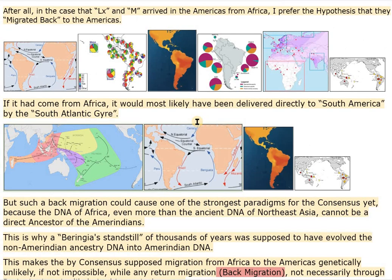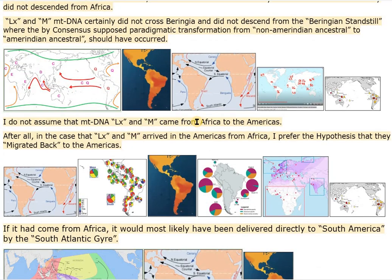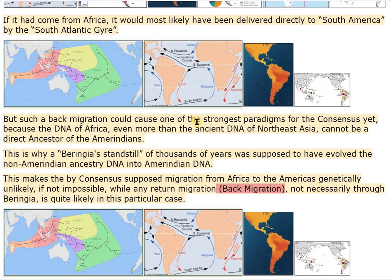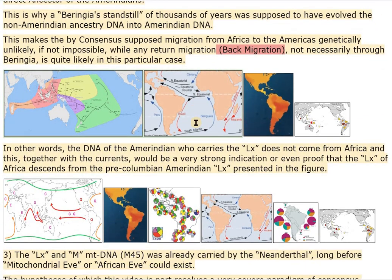While any return migration — back migration — not necessarily through Beringia, is quite likely in this particular case. In other words, the DNA of the Amerindian who carries LX does not come from Africa, and this, together with the currents, would be a very strong indication or even proof that the LX of Africa descends from the pre-Columbian Amerindian LX presented in the figure.